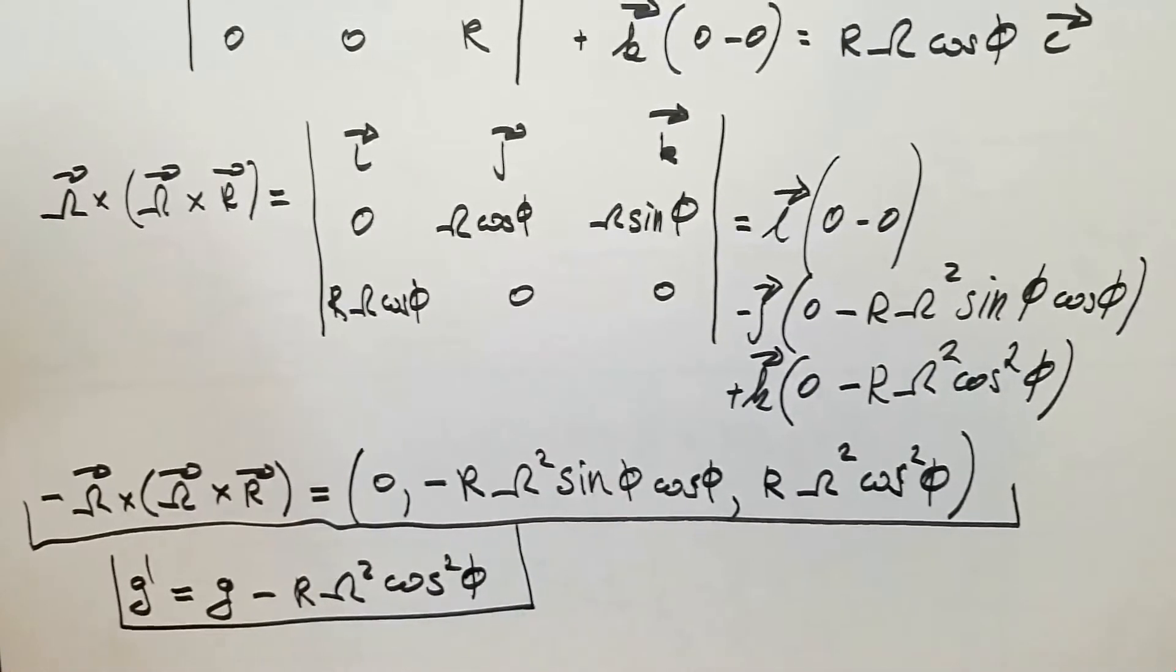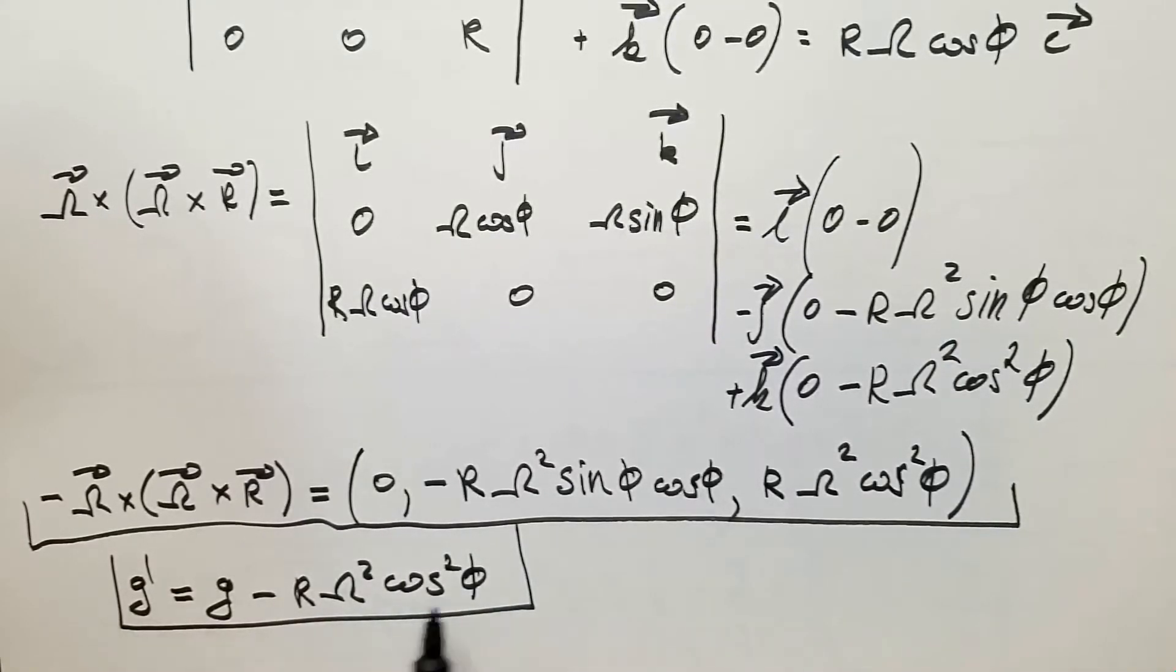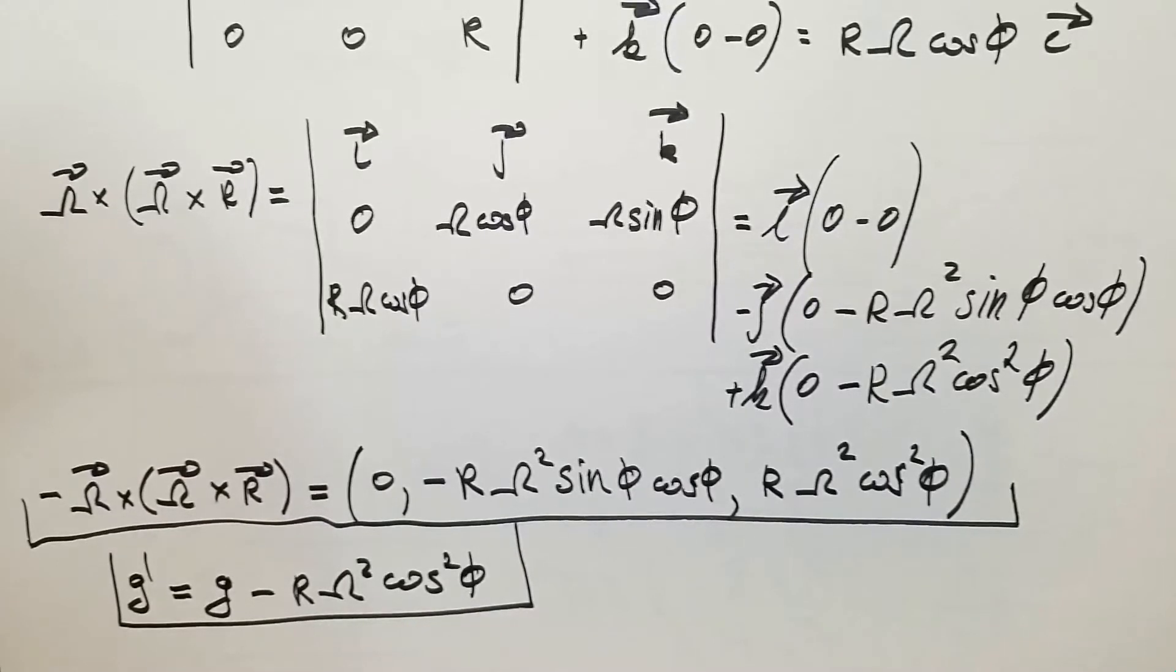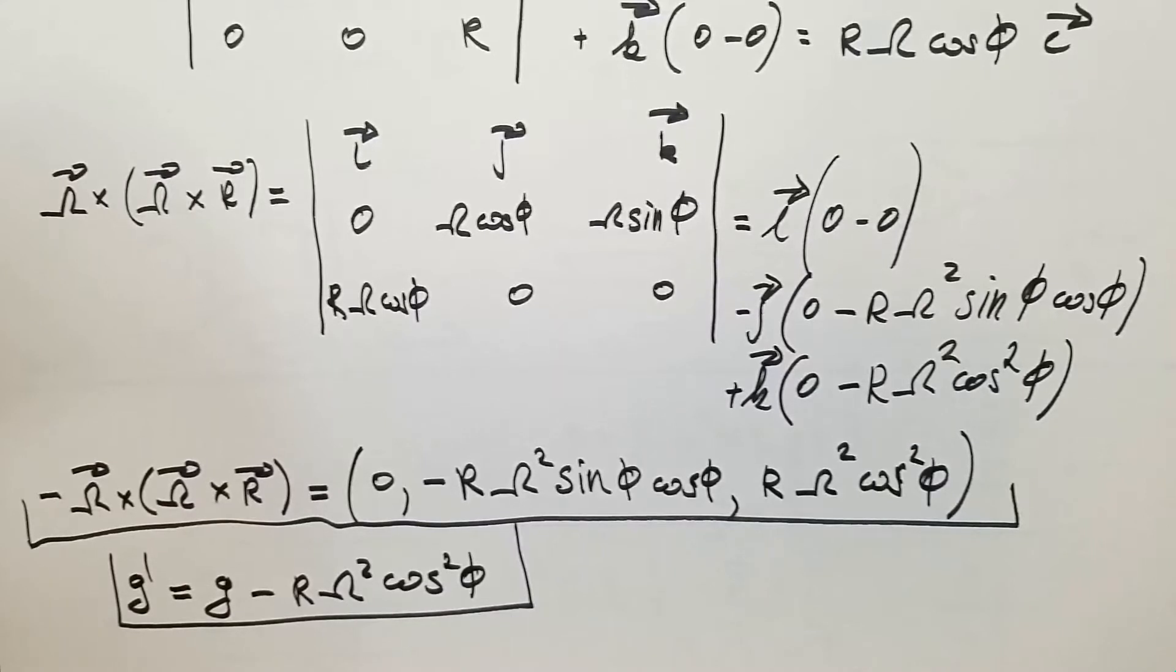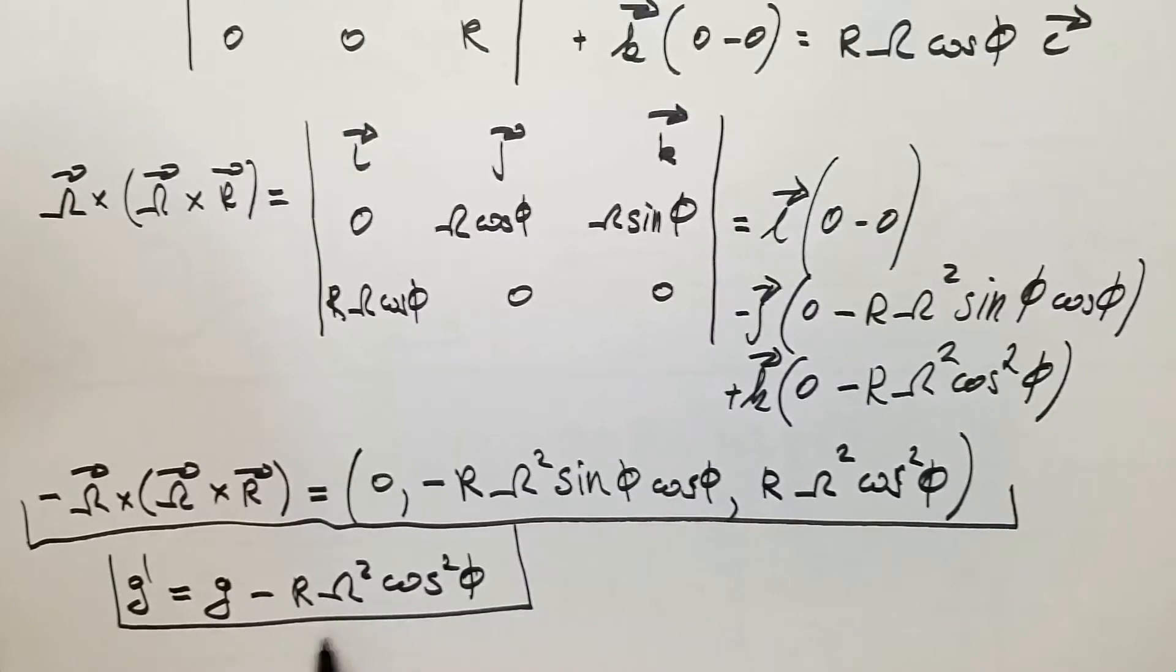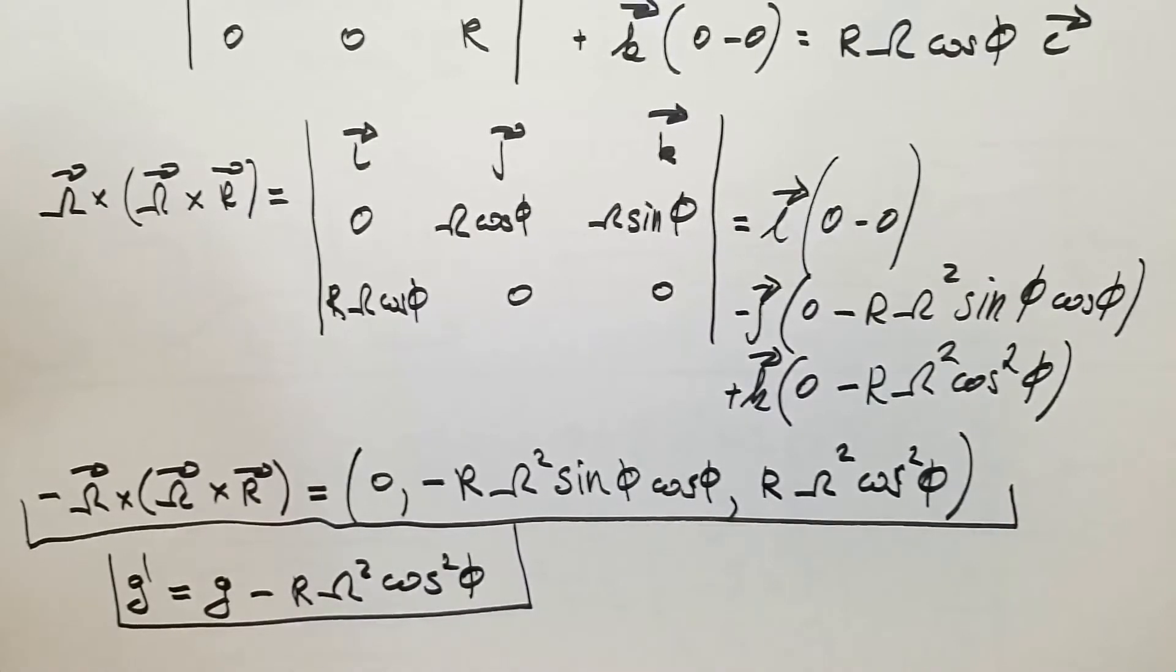This is the equation for the apparent gravity and you can see that it is function of latitude. Overall variation along the surface of the Earth is 0.3% in respect to the real gravity G. Of course, the smallest contribution is at the poles and the largest contribution of centrifugal acceleration is at the equator.